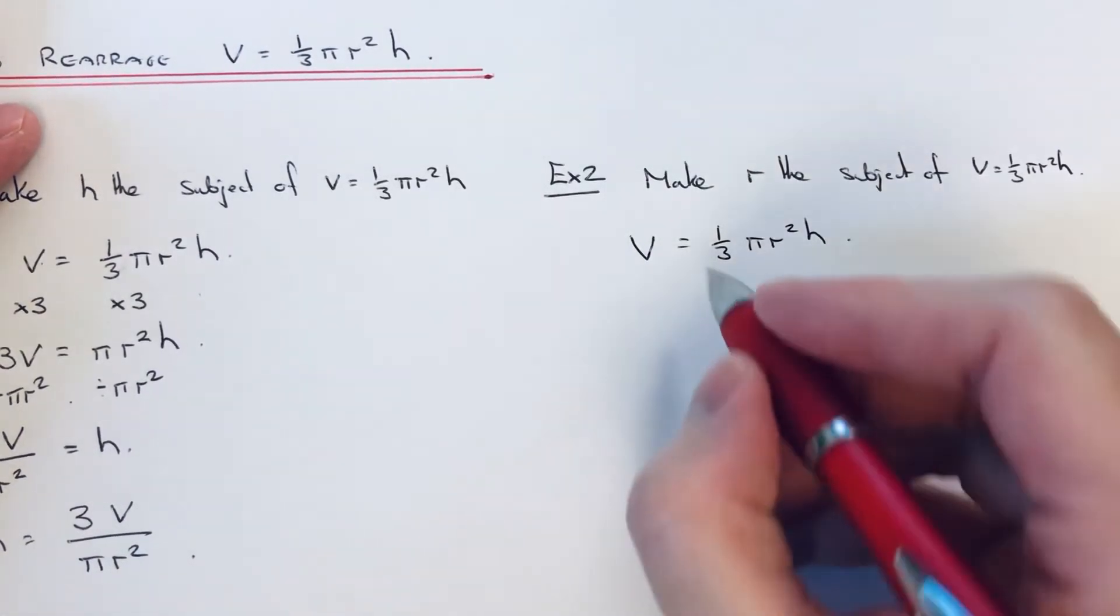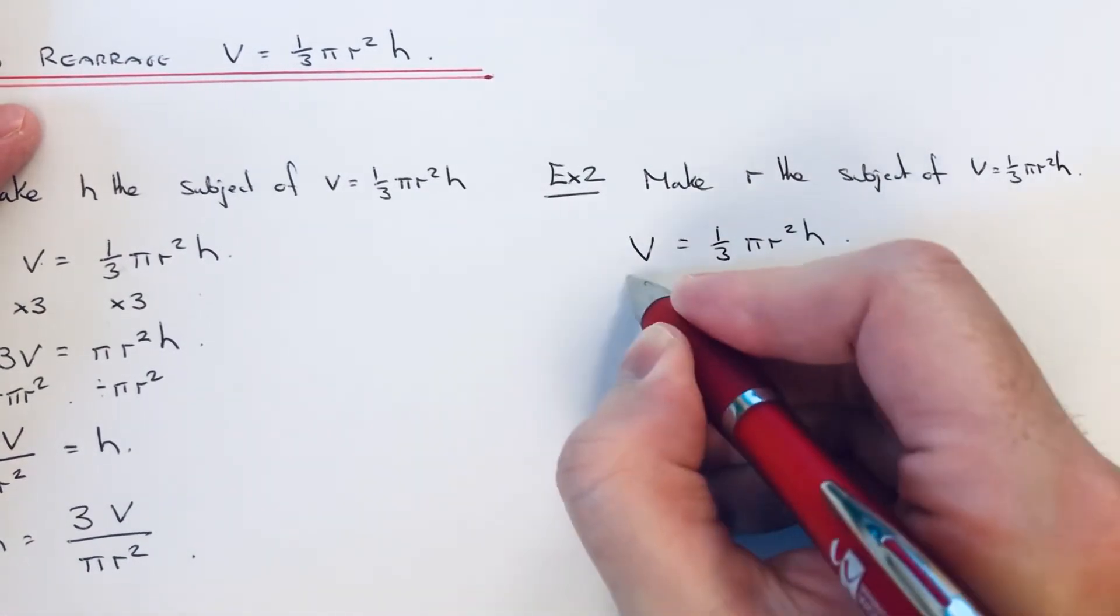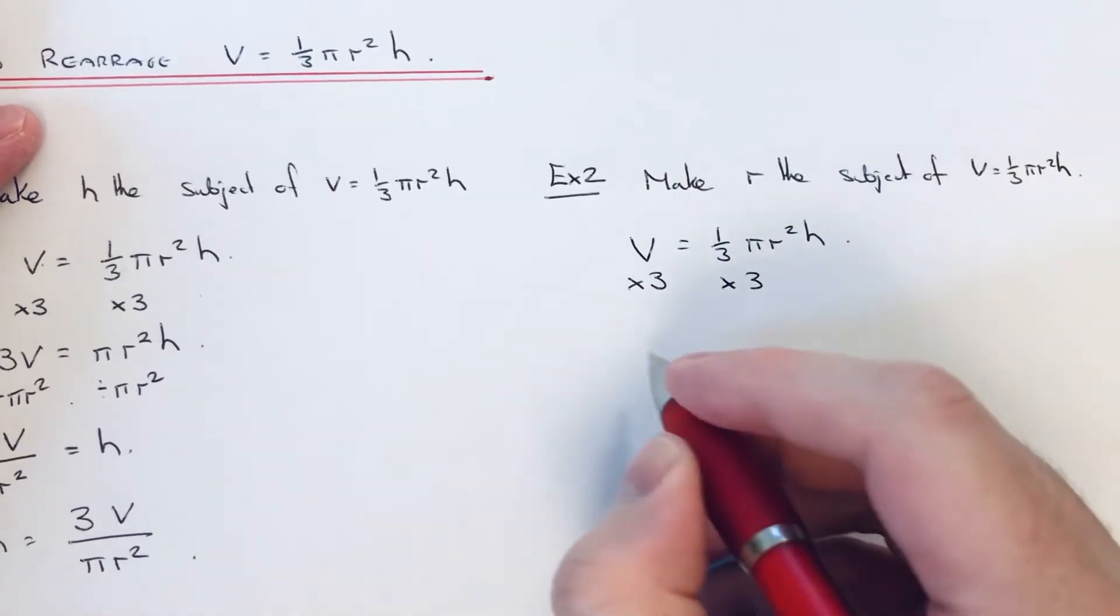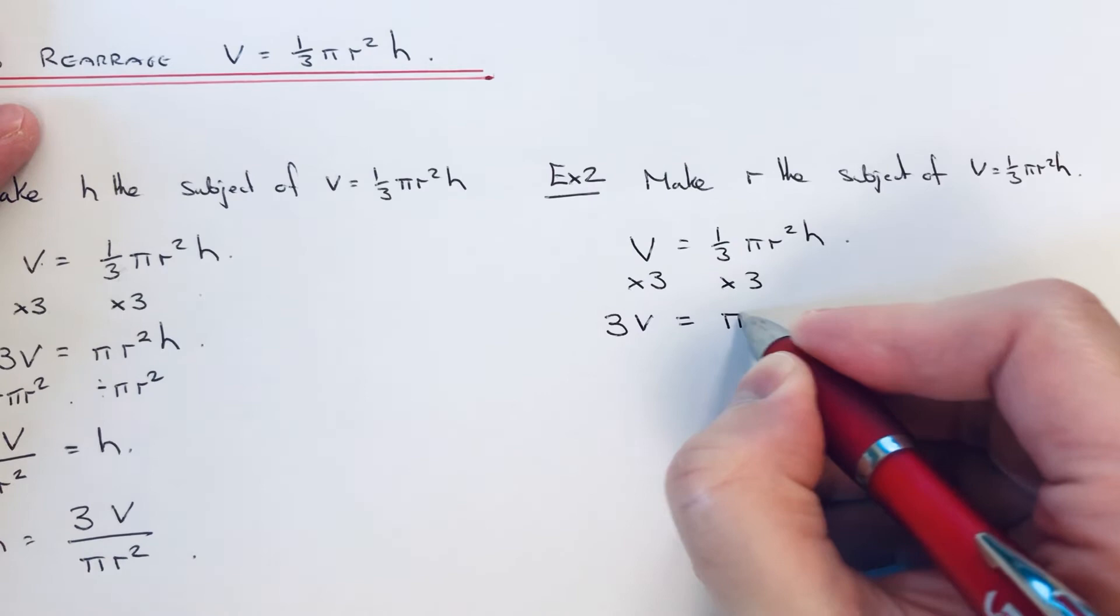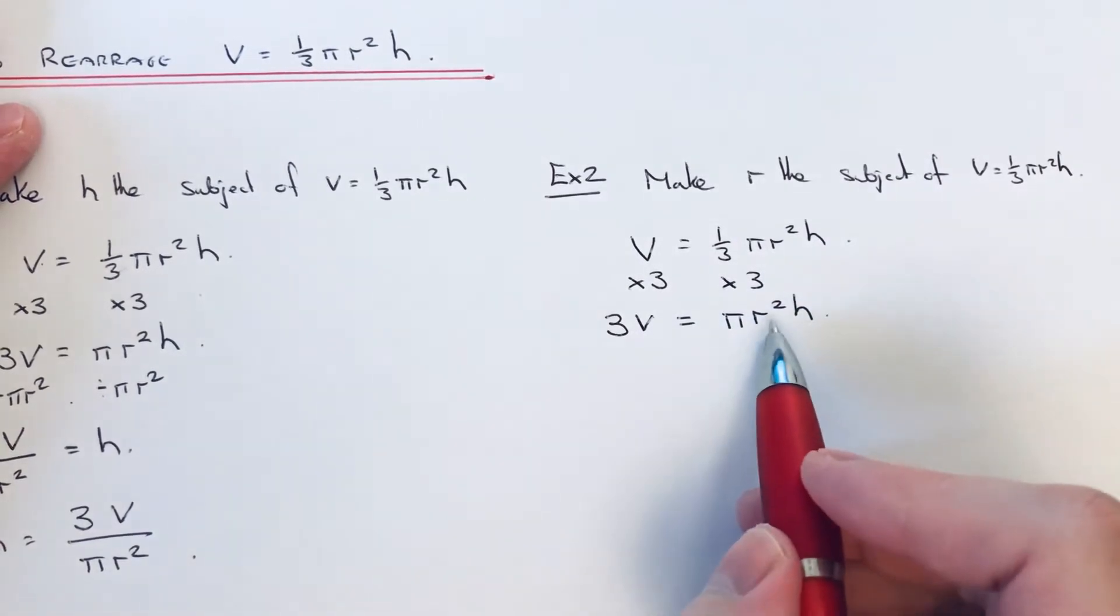Like the first example, I'm just going to times both sides by 3 to cancel out the 1/3. That will give me 3V = πr²h. r² is now being multiplied by πh.